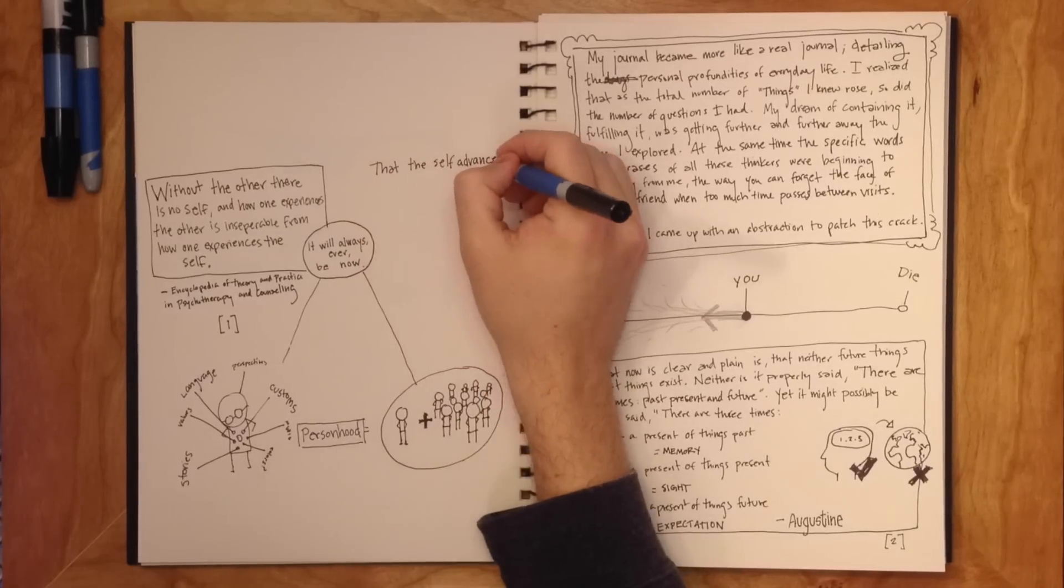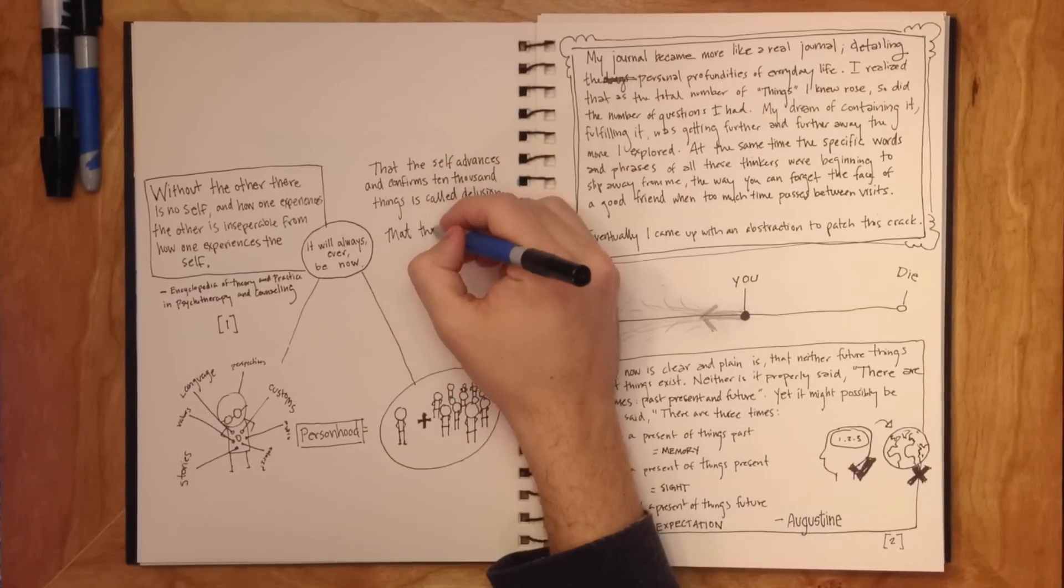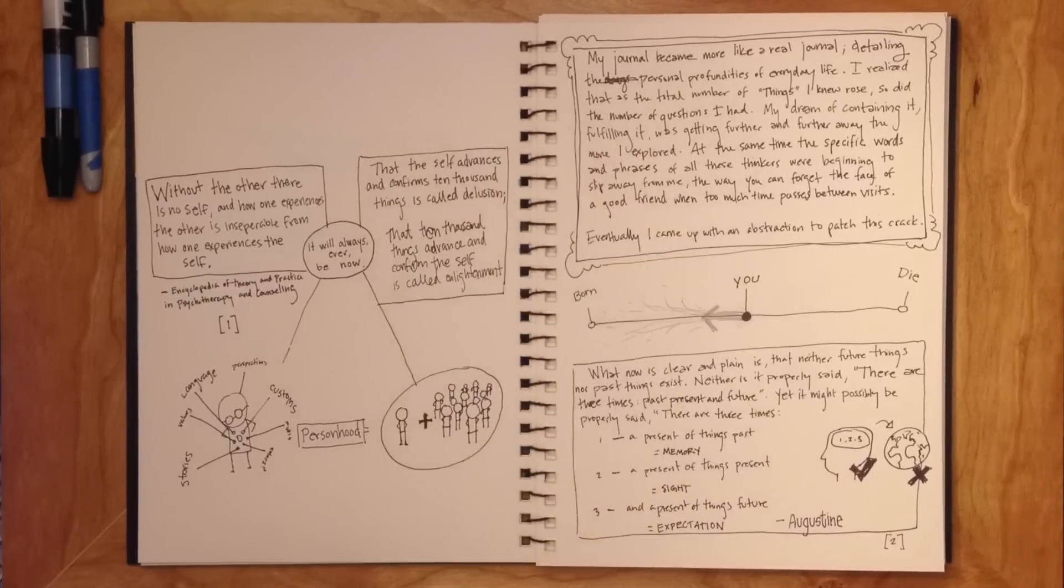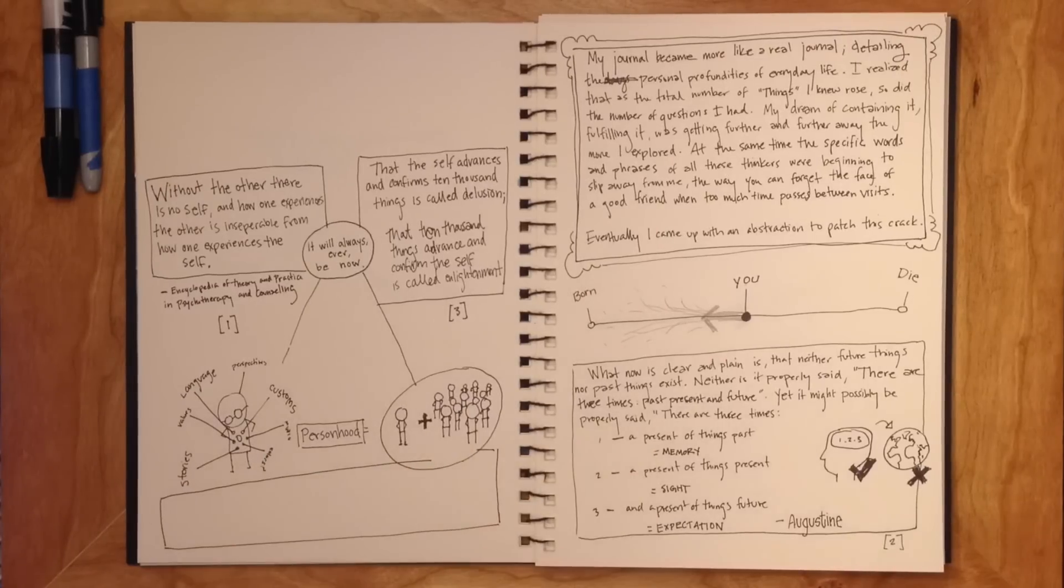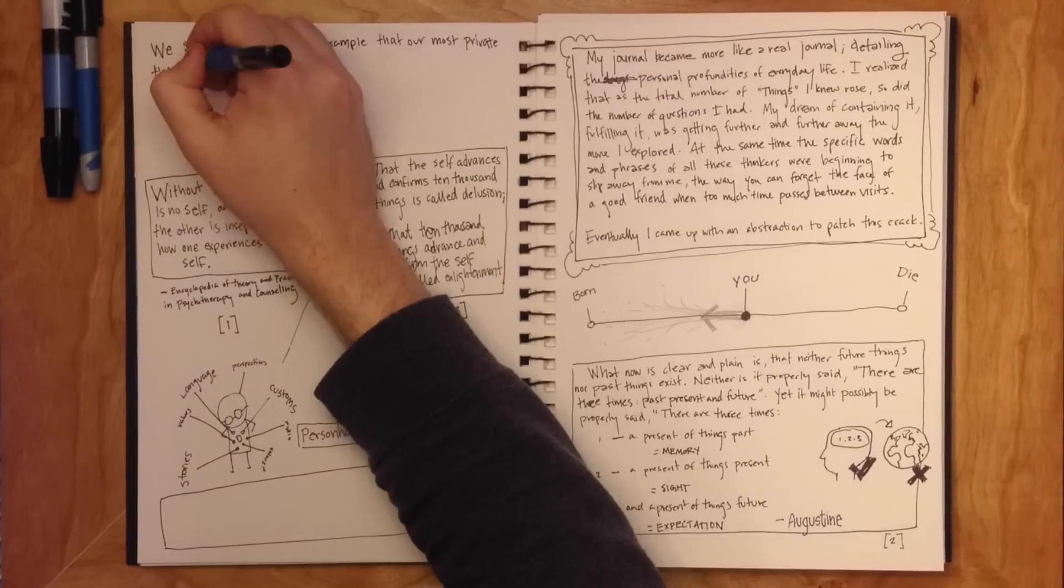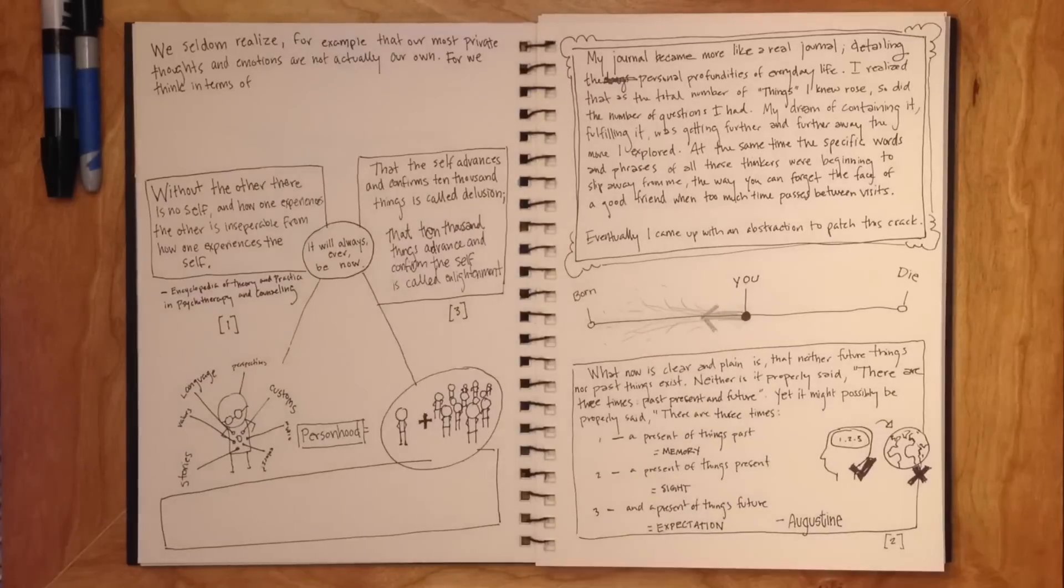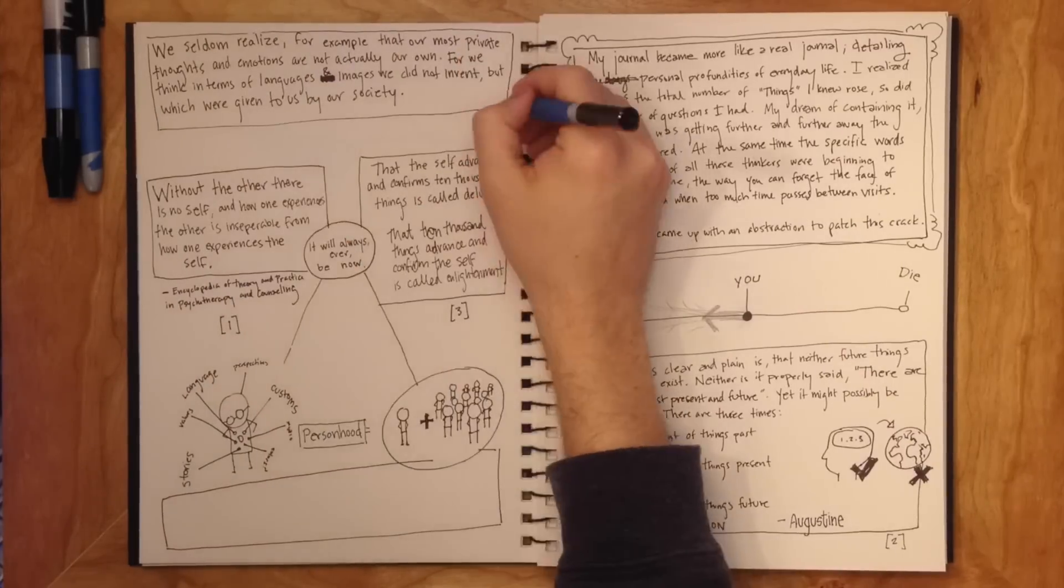That 10,000 things advance and confirm the self is called enlightenment. And somewhere in the middle of that we have Alan Watts who said, we seldom realize, for example, that most of our private thoughts and emotions are not actually our own, for we think in terms of languages and images which we did not invent, but were given to us by our society.